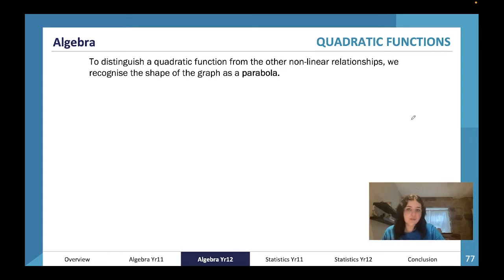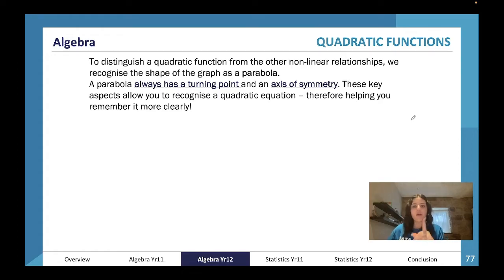To distinguish a quadratic function, we want to recognize the shape of the graph as a parabola. It always has a turning point and an axis of symmetry. They're very distinguishable because they always look like this.